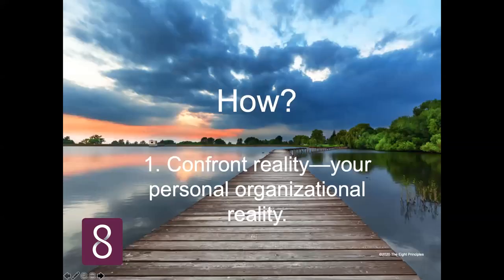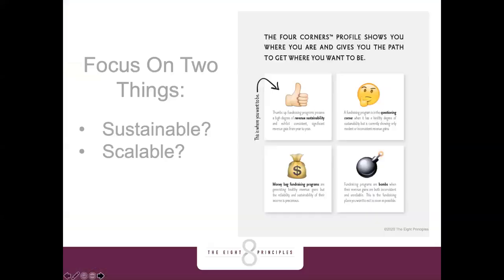The first thing you must do is confront your own organizational reality. We use something called the Four Corners Profile, built on the Boston Consulting Group box model but applied to fundraising. We focus on two things: how sustainable are you right now, and how scalable are you? That puts organizations into one of four boxes: thumbs up (high sustainability, high growth); questioning face (high sustainability, low growth); money bag (high growth, low sustainability — your transactional crowd); and low sustainability, low growth — one good shove from going over the cliff.